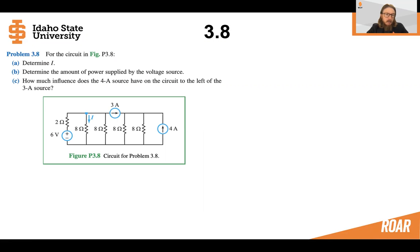Part A asks us to determine I. I is this current right here that is going down through the 8 ohm resistor as labeled. And in part B, we're asked to determine the amount of power supplied by the voltage source. So here is the voltage source. So we're going to check how much power it supplies, and then we're going to see how much influence does the 4 amp source have on the circuit to the left of the 3 amp source.